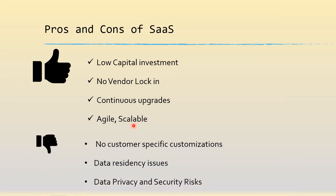What are the cons? The main one is that there is no customer-specific customization. There could be hooks for specific integrations which the core banking application can provide to each customer, but functional or code customization cannot be provided. Data residency issues also arise, because SaaS hosting is done in specific countries, and if the cloud provider doesn't have a presence in the customer's country, regulators may raise concerns. Finally, although cloud providers claim very high data privacy and regular security assessments, this is always a perennial risk for any bank when their data is hosted on the cloud in a SaaS model.